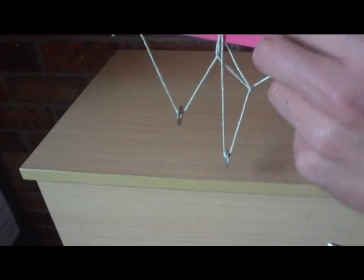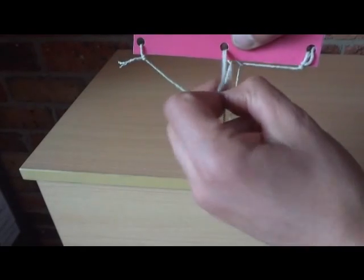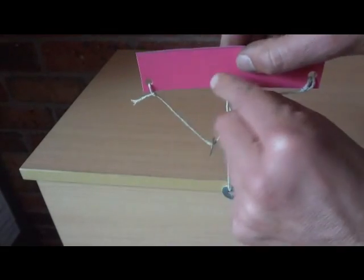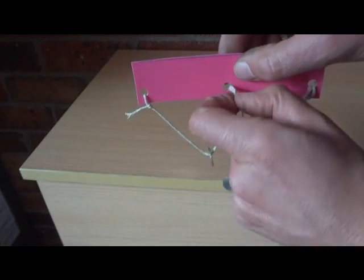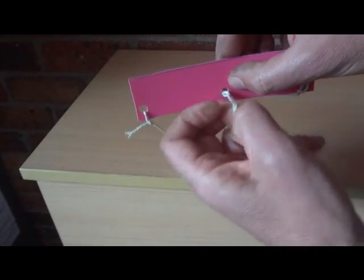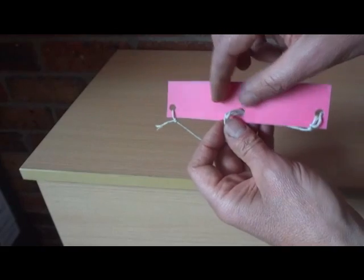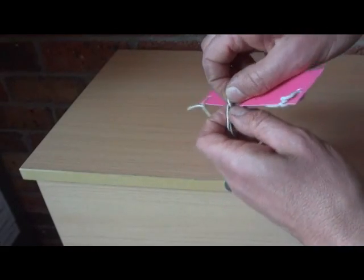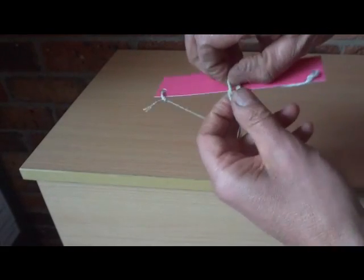Next, we're going to grab those two strings coming out through that hole. We'll grab both strings and pull until the string comes through from behind. And where that piece of string goes through, we'll just open it up there.